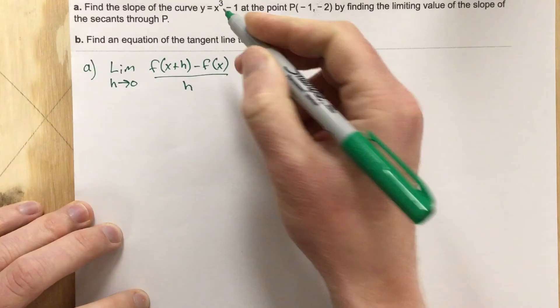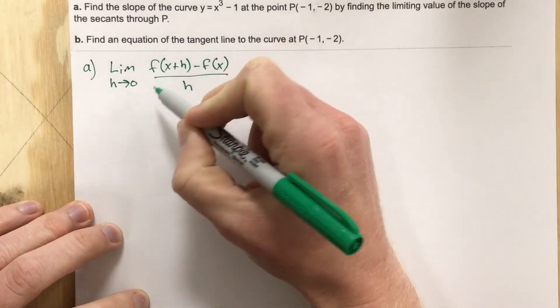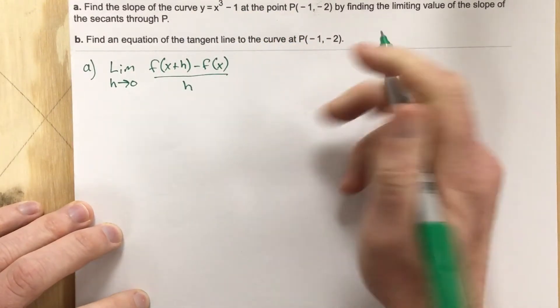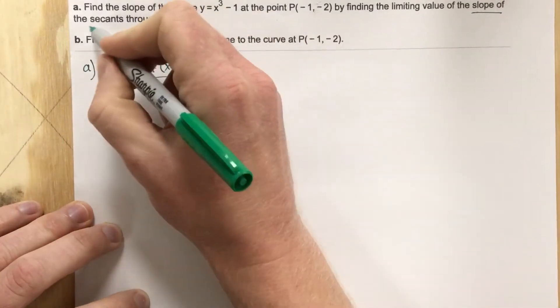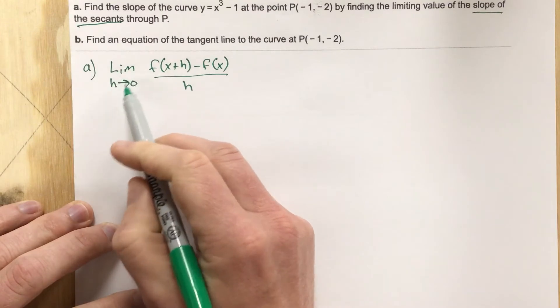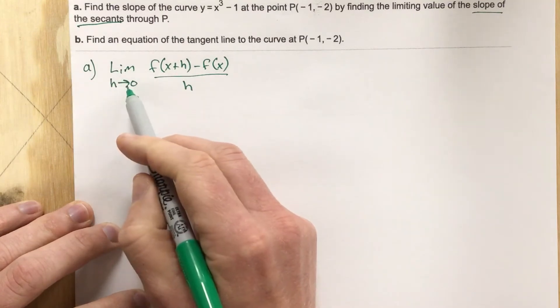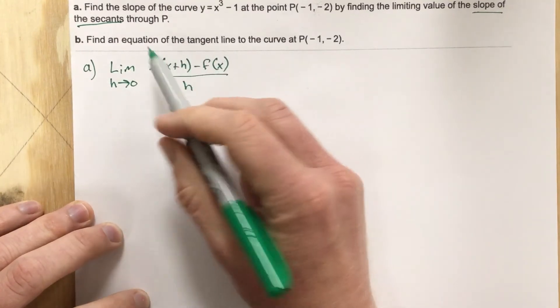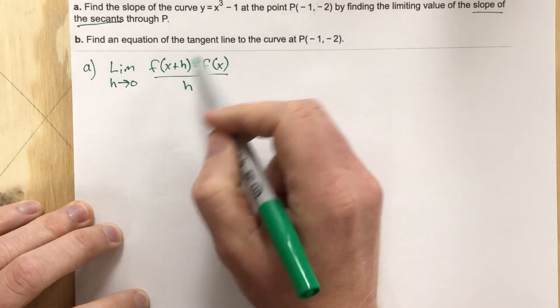They want us to use this to find the slope of the secant through P, which would be just this portion of it, and then take the limit as h approaches 0 to find the actual tangent slope, and that tangent slope we're going to use to find the tangent line.